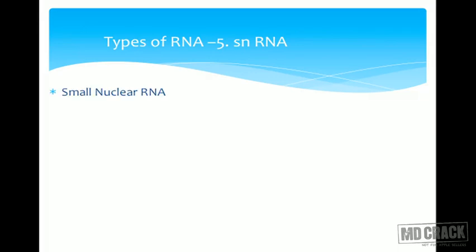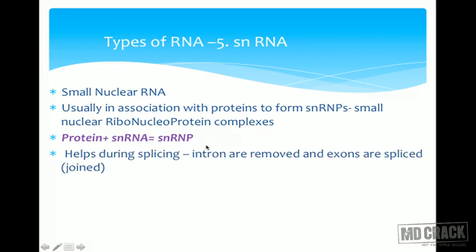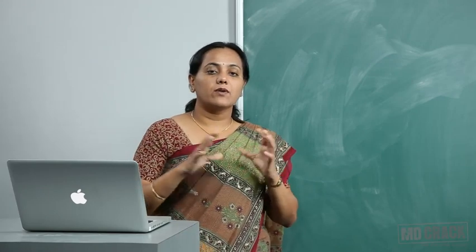One more type of RNA is snRNA — small nuclear RNA. snRNA associates with proteins to form snRNPs, small nuclear ribonucleoprotein complexes, also called snurps. These are important in splicing: protein plus snRNA forms the snRNP, which helps remove introns and join exons together, thereby converting the primary transcript hnRNA into mRNA.